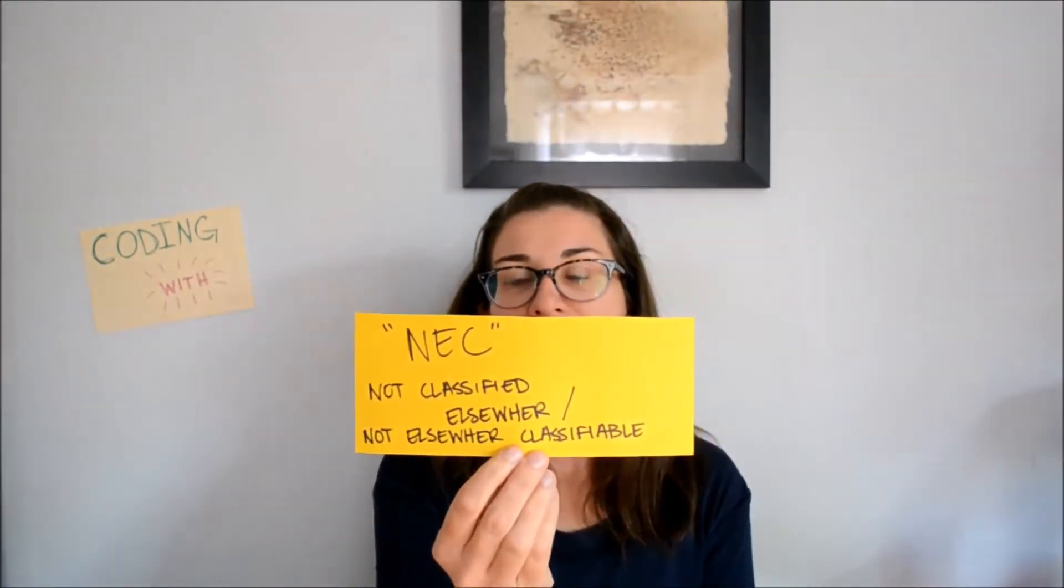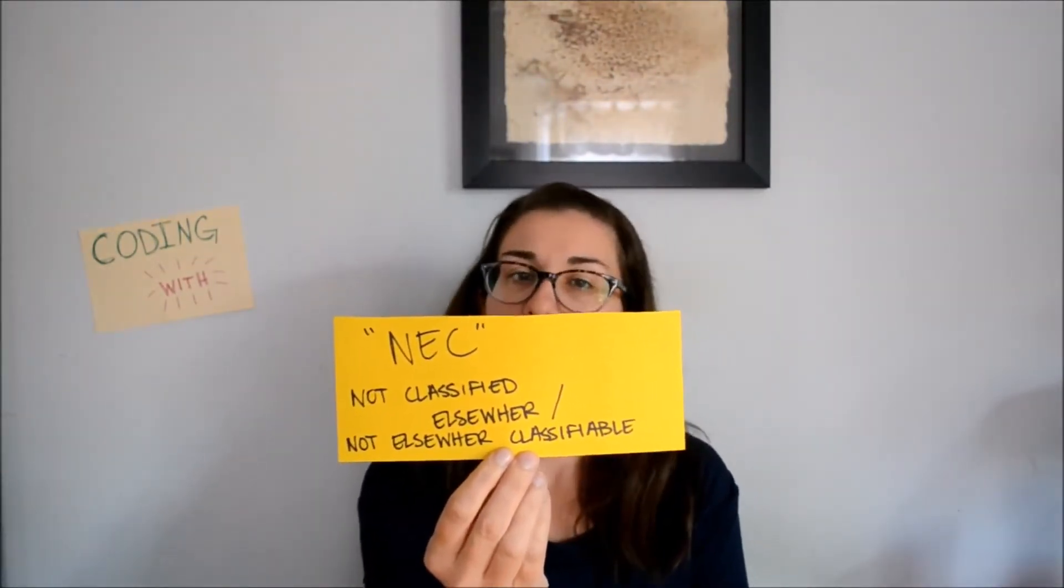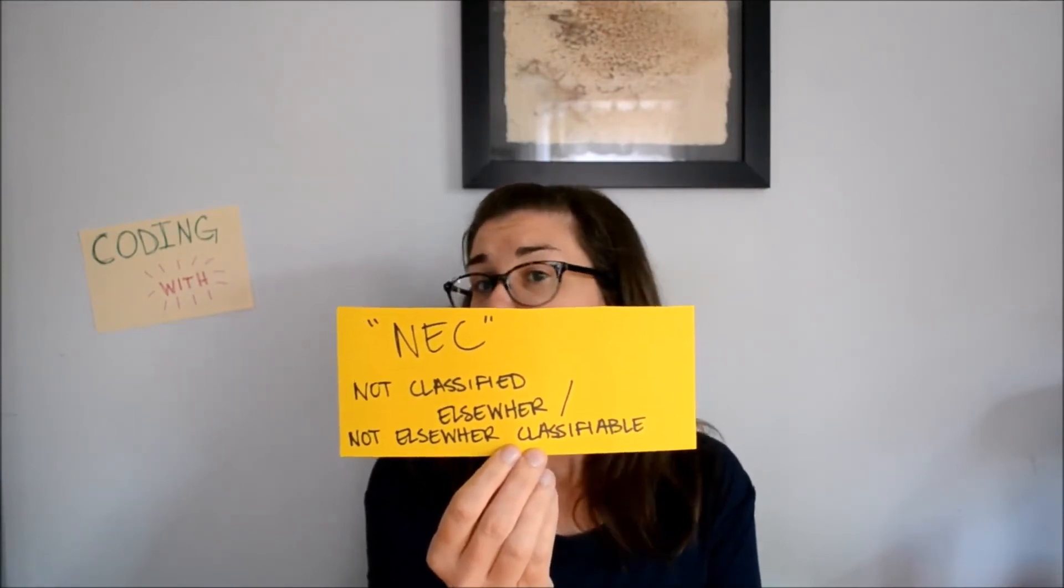And then we have NEC or not classified elsewhere or not elsewhere classifiable. When a specific code is not available and a more general description is only offered. So you will find NEC when you are talking about terms that say other peritonitis or other cystitis with hematuria. So it's basically telling you that there isn't another code that gives a really detailed description that you're looking for. So then you would just use that NEC term because you can't find a code that has that other information that you need.